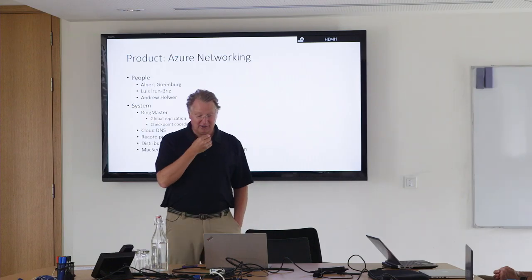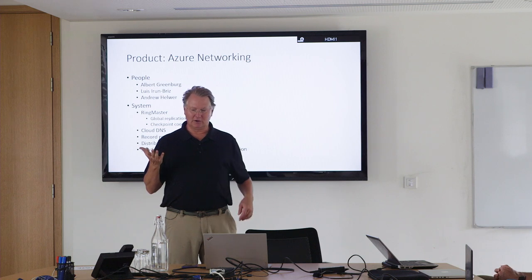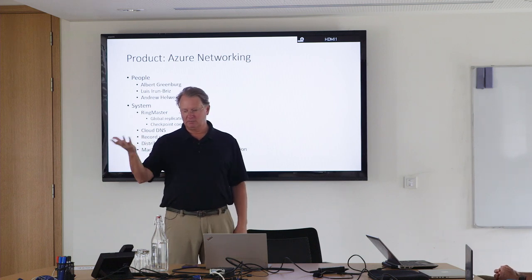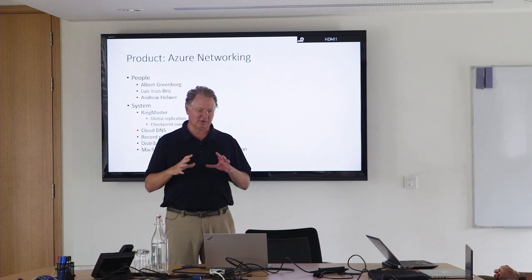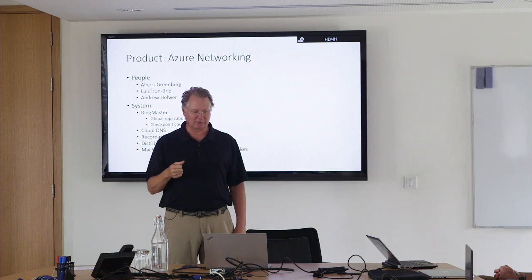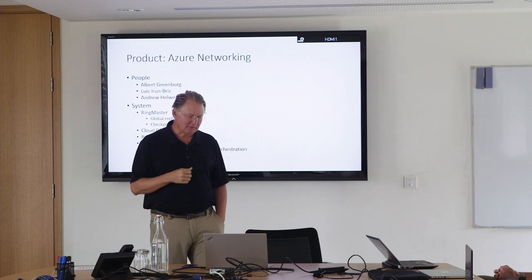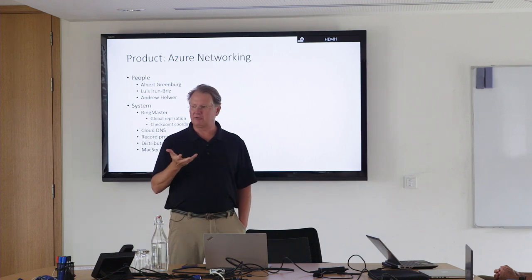Azure Networking does what you'd expect — managing both inbound and outbound traffic into and out of Azure, with subnets and communication between all the machines within Azure. It's a complicated problem and it just has to be right or else nothing else works. Networking doesn't leave any state around, making it very difficult to debug issues. So they do a lot with specification of various sorts before their systems launch.